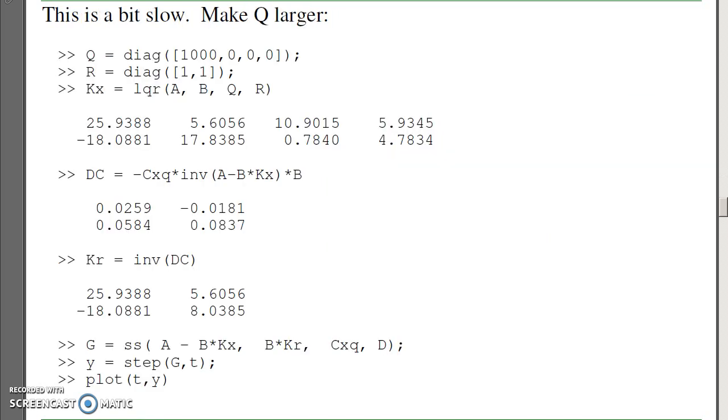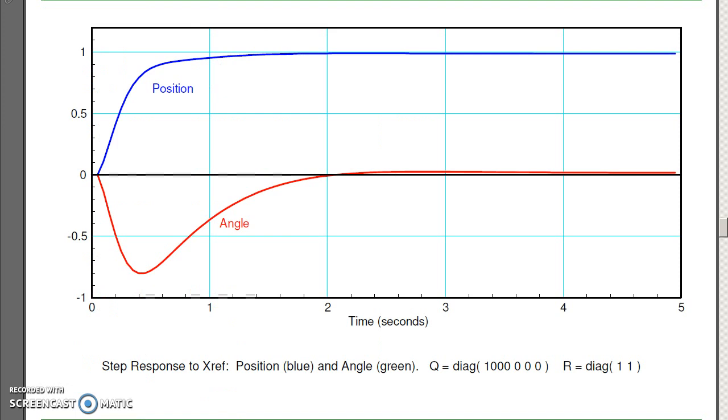To speed up the system, increase Q. So if I increase Q to 1,000, I now get higher feedback gains upon KR to make the DC gain 1. Again, the second column is going to be times 0. I want the angle to always be 0. Take the step response. I now have a faster system. However, the angle is too large.